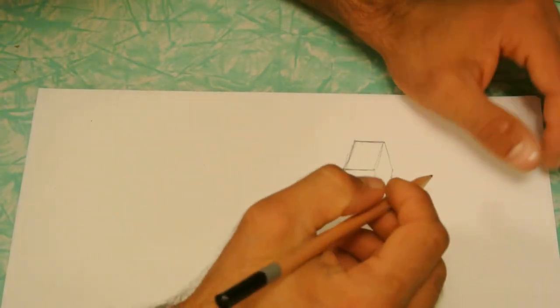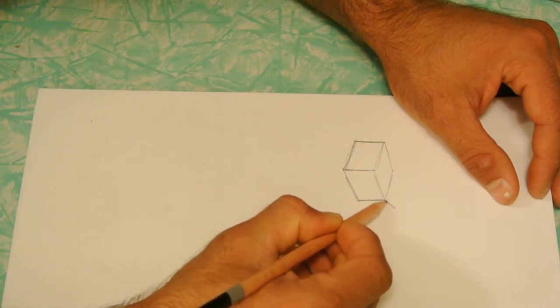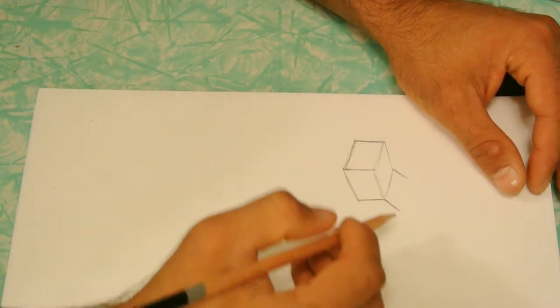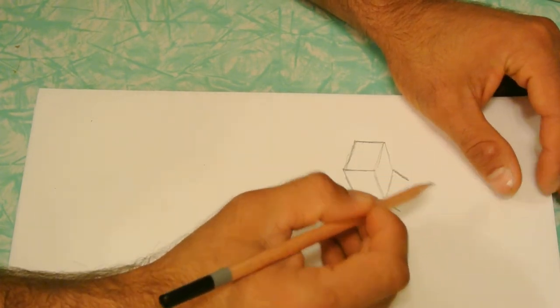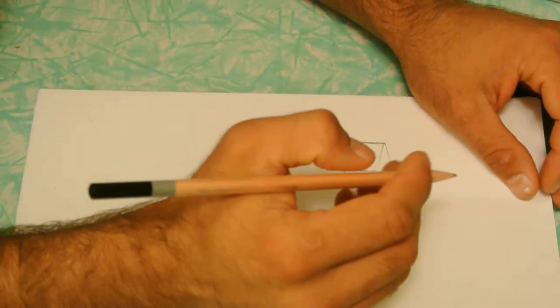Now you're going to draw the flaps of the box. Up here on top, you're going to draw a flap open by drawing two parallel lines running at a diagonal away from your box.